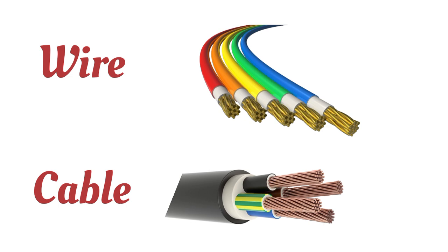In reality, a wire is a single insulated conductor. As you can see in the image, the conductor is insulated inside a jacket. A cable, on the other hand, is two or more insulated wires enclosed within a single jacket.